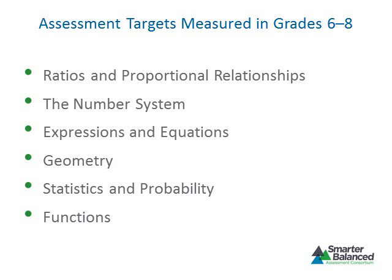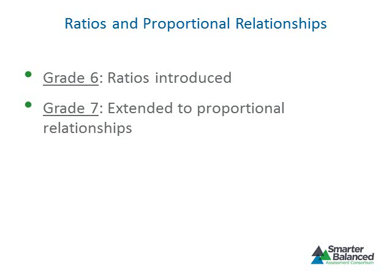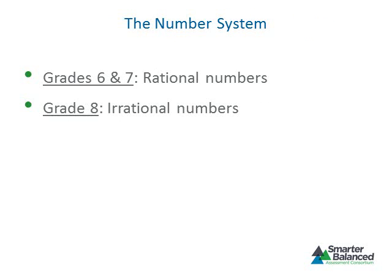Ratios are first introduced at grade 6 and are continued and extended to proportional relationships at grade 7. Students apply and extend previous understandings of operations with fractions in grade 5 to the system of rational numbers in grades 6 and 7, and irrational numbers in grade 8.